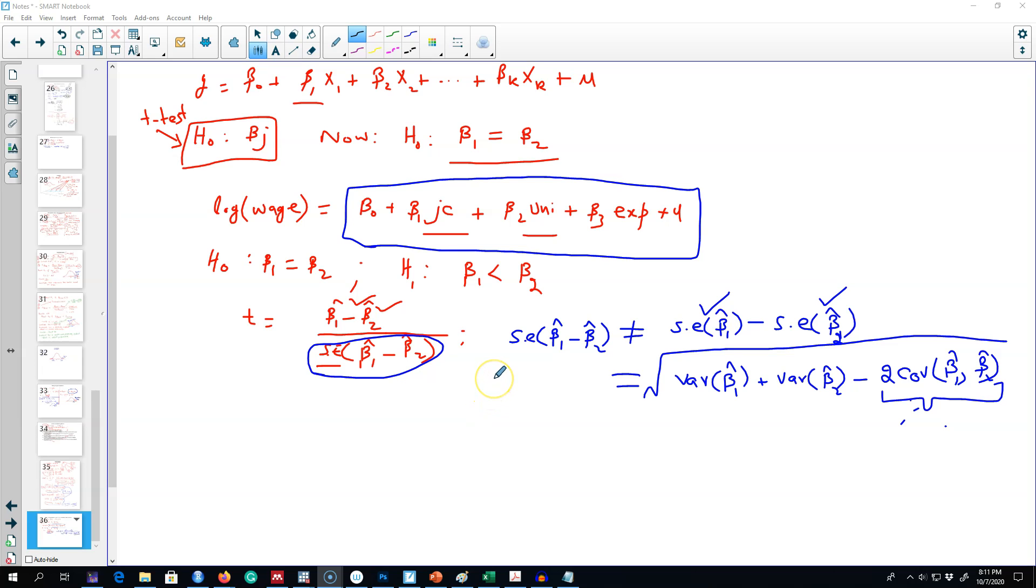Last time I talked about testing a hypothesis about two coefficient values. We were interested in knowing the returns to education on junior college versus university, and we hypothesized that the returns to education on junior college and university education are identical, that is beta 1 coefficient equals beta 2 coefficient.